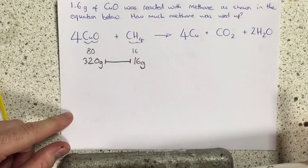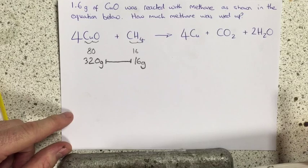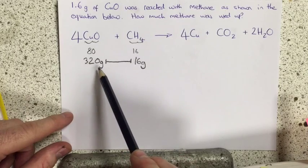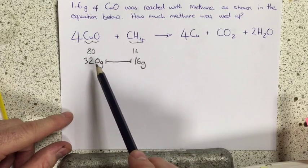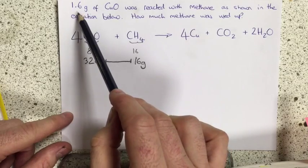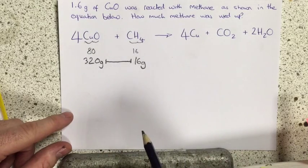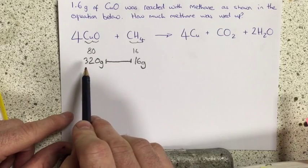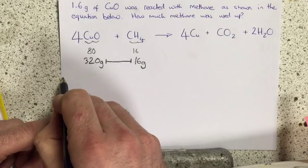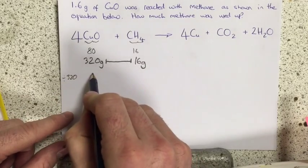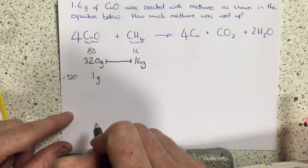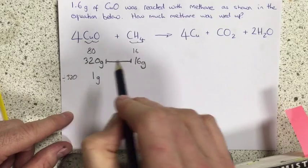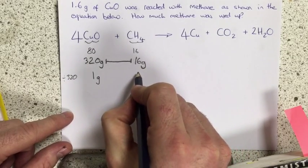And from here it's quite easy to finish the calculation. We don't want to know how much methane we need for 320 grams. We want to know how much we need for just 1.6 grams. So how do we get there? If we divide this side by 320, you can see we will get down to 1 gram of copper oxide. And because we've just divided this side by 320, we divide this side by 320.